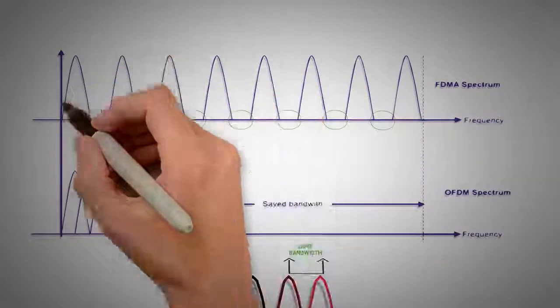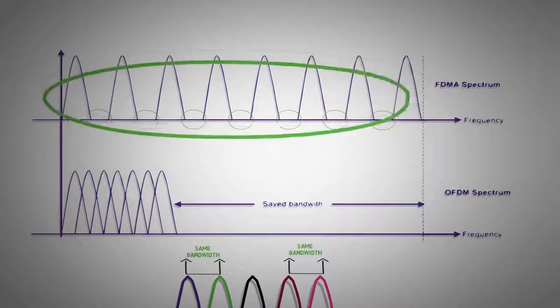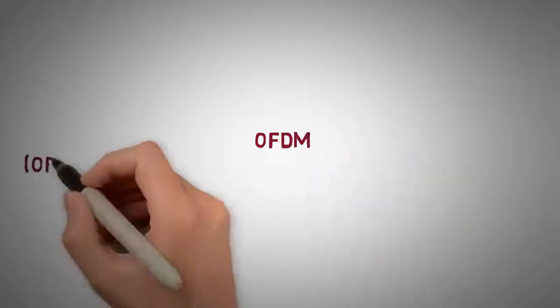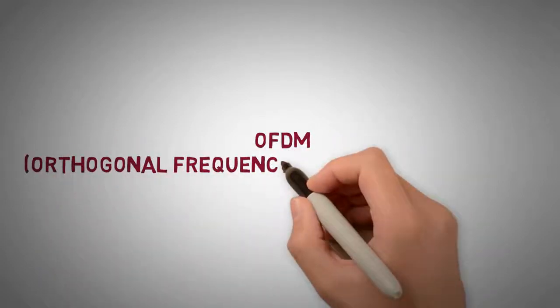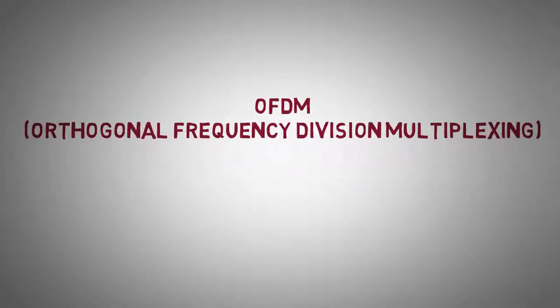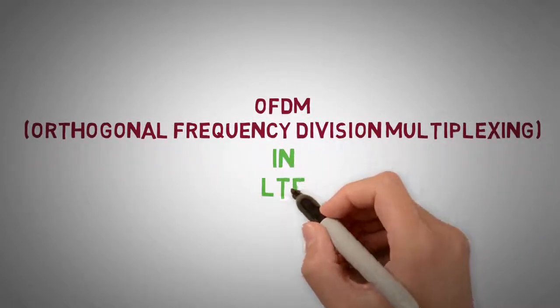As a result, the sub-carriers can be closely packed to increase channel efficiency. Now, before looking at the multiple access part, let's understand how OFDM or orthogonal frequency division multiplexing works and how it's used in long-term evolution.